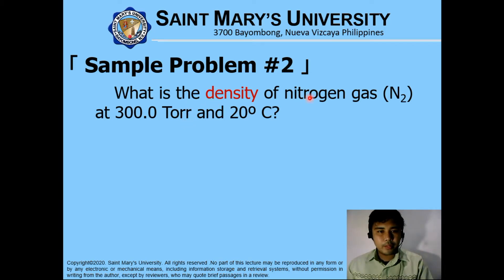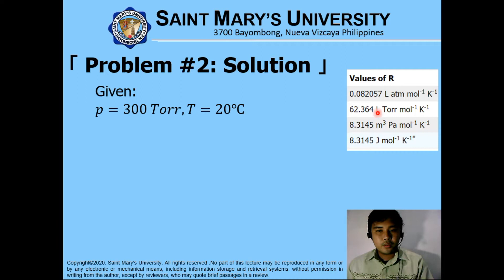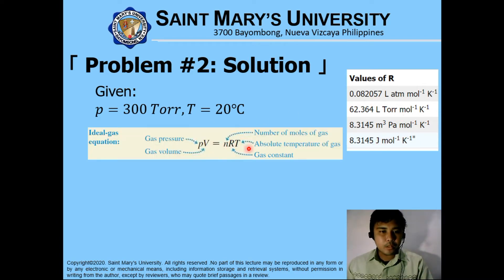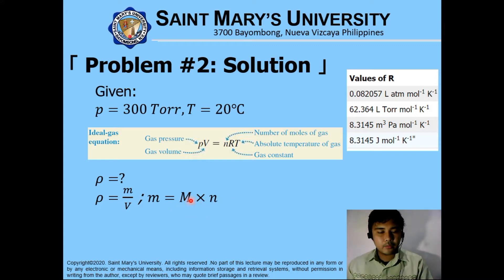For problem number 2, we are asked to find for the density of nitrogen gas, N₂, at 300 Torr at 20 degrees Celsius. As you can see here, we have the conversion for Torr. We can actually use this one, or you can actually convert 300 Torr to any of these units using the ideal gas equations. We are asked to find for the density, and in order to find for the density, we should relate it to the density formula, which is mass over volume. We know that mass is equivalent to the molar mass multiplied by the number of moles.